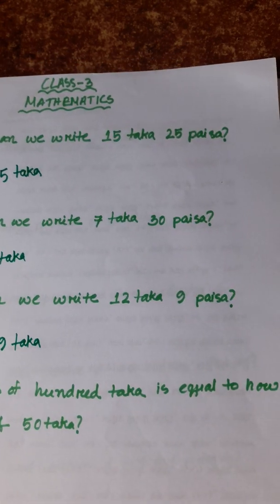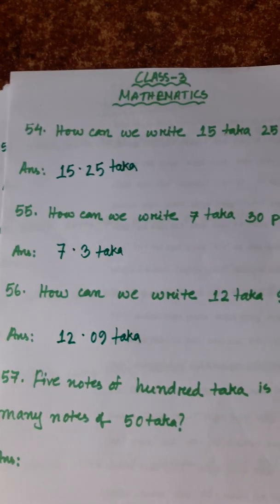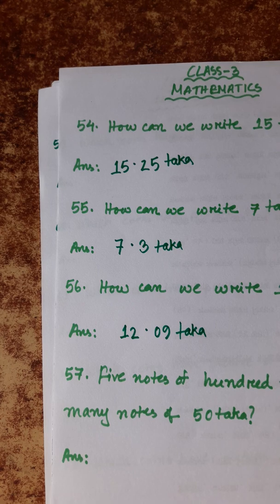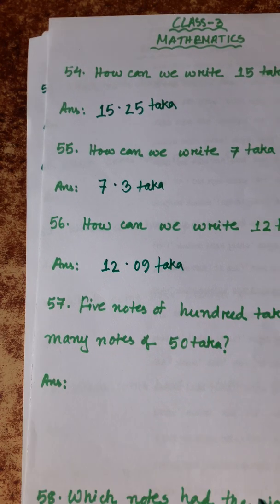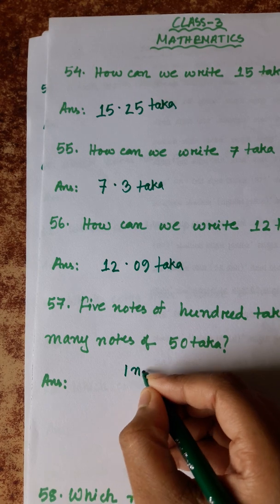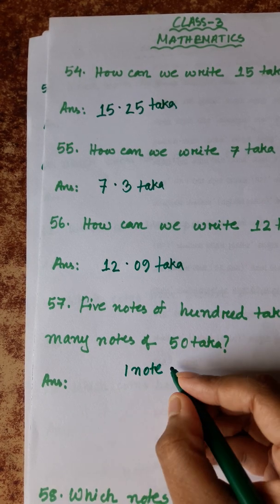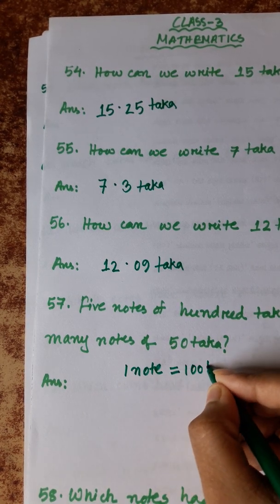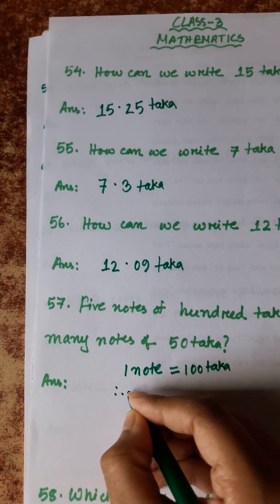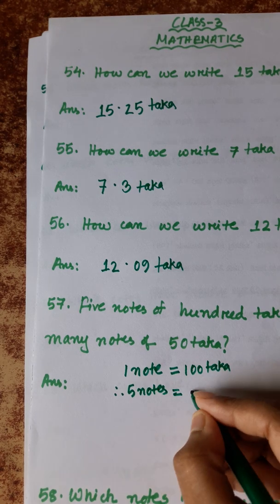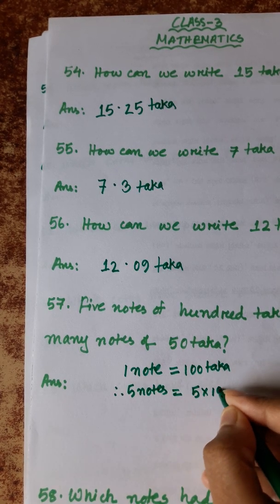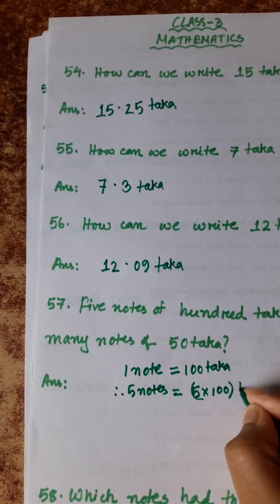Number 57: 5 notes of 100 is equal to how many notes of 50? Let's see — 5 notes of 100: one note is equal to 100, so 5 notes is equal to 5 into 100, which gives us 500.